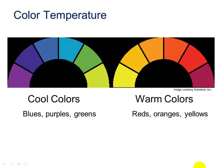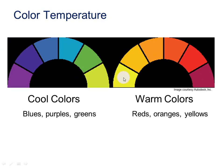Color temperature is another consideration. There are two different kinds of color: cool colors — purple, blue, and green — and warm colors — red, orange, and yellow.